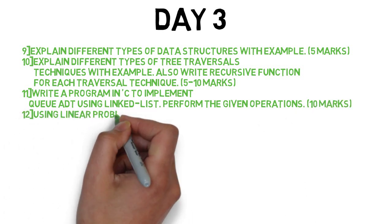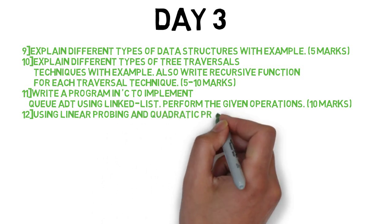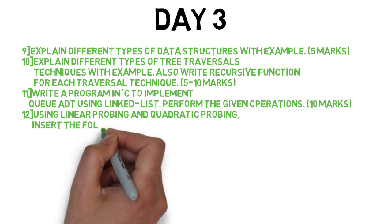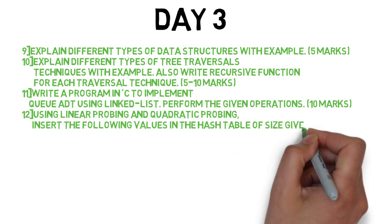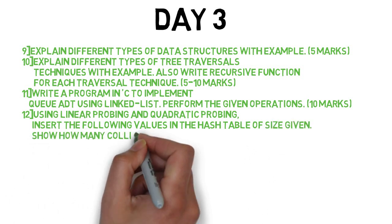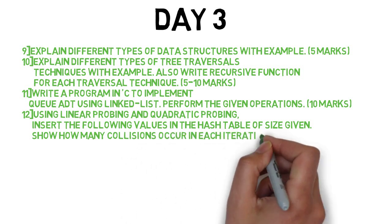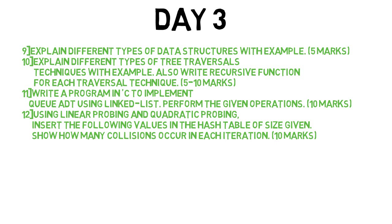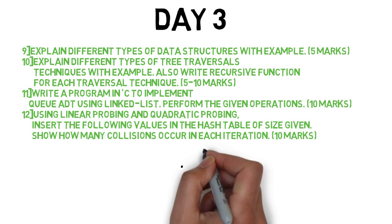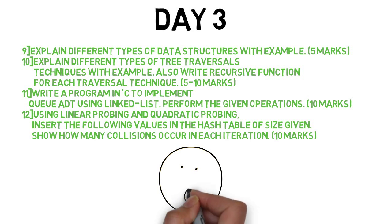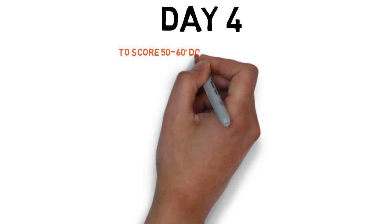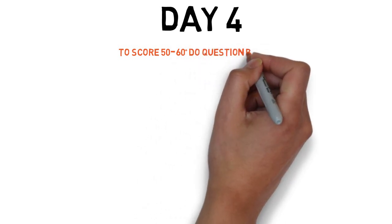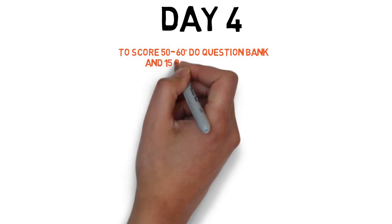The 12th question, the last for Day 3, is linear probing or quadratic probing. Insert the following values in a hash table of a given size and show how many collisions occurred in each iteration. This is an easy sum involving modulo operations with the size of the hash table.